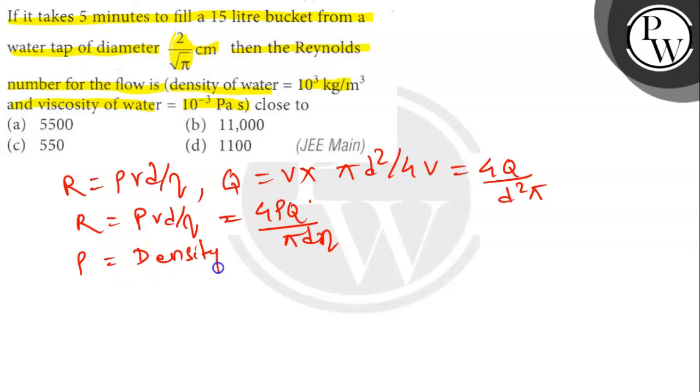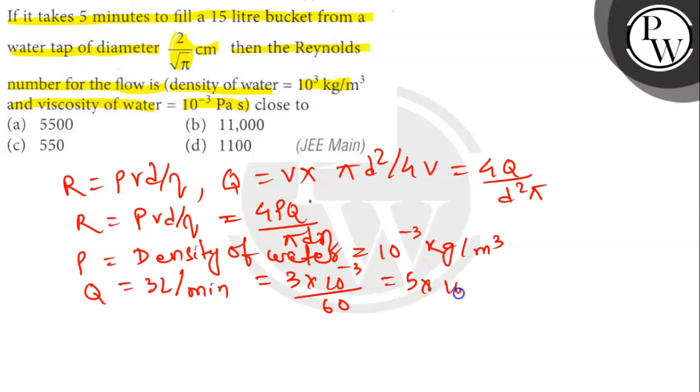Which is 10³ kg/m³. Q is 3L per minute, which equals 3×10⁻³ divided by 60, which equals 5×10⁻⁵ m³ per second.